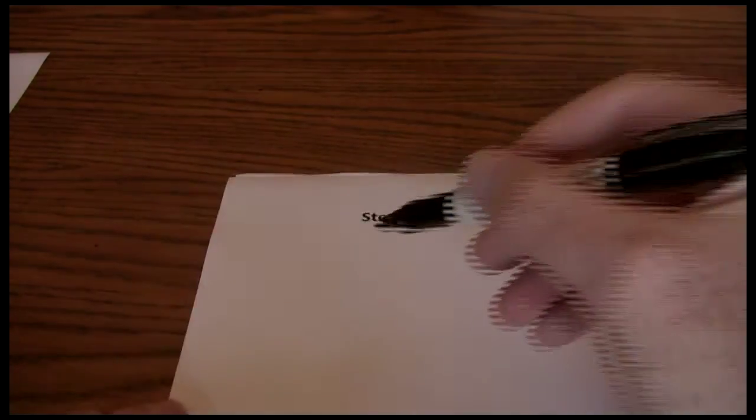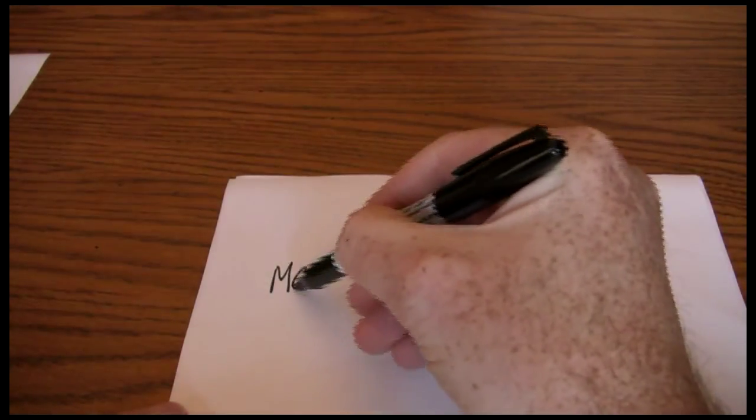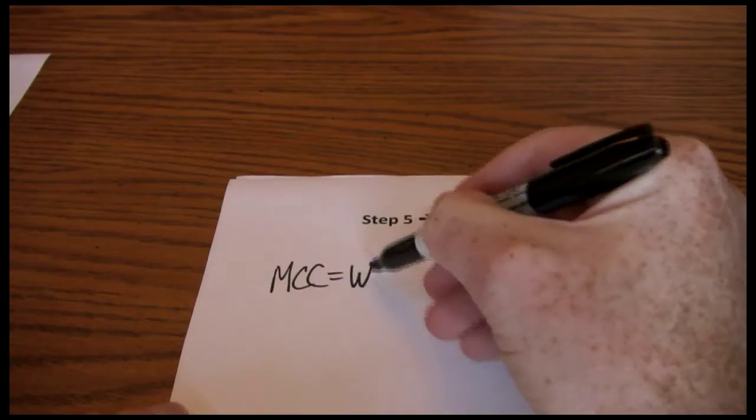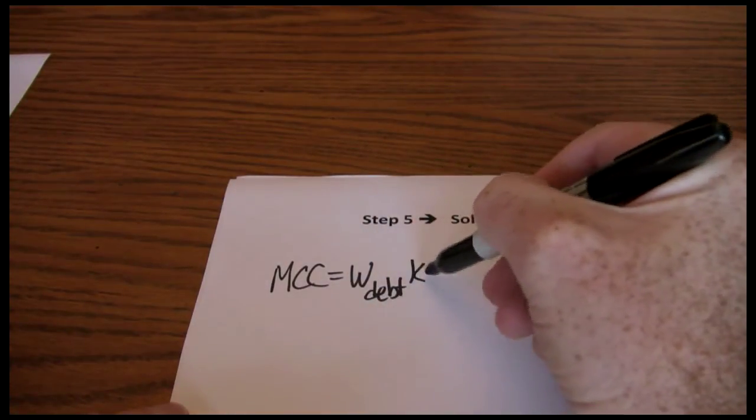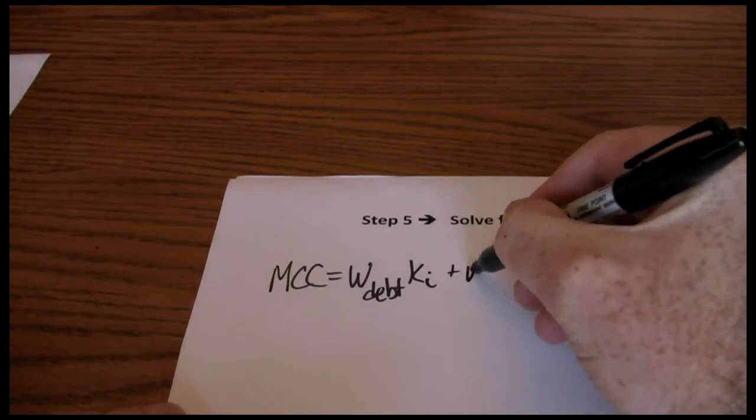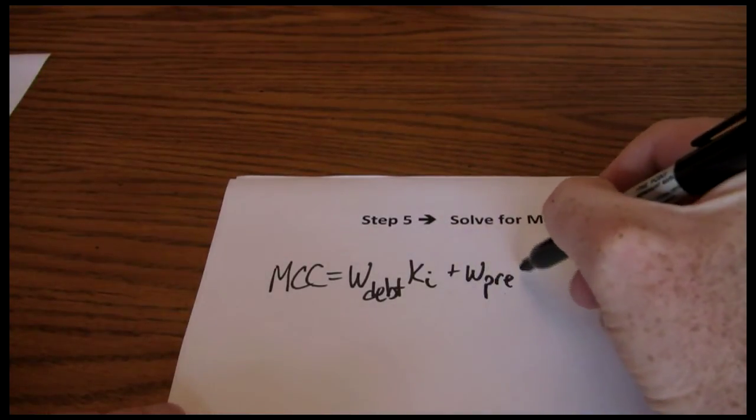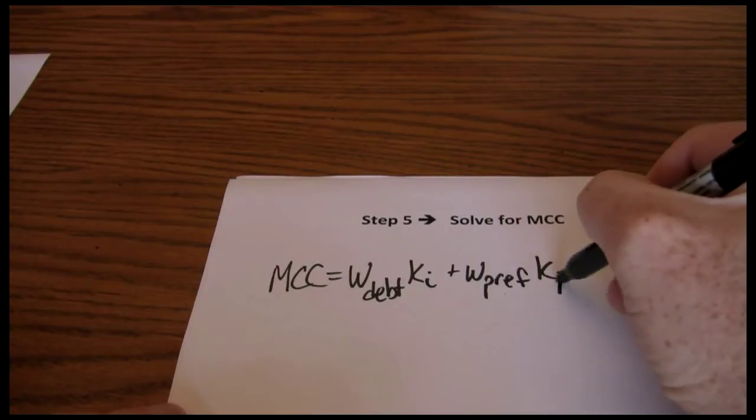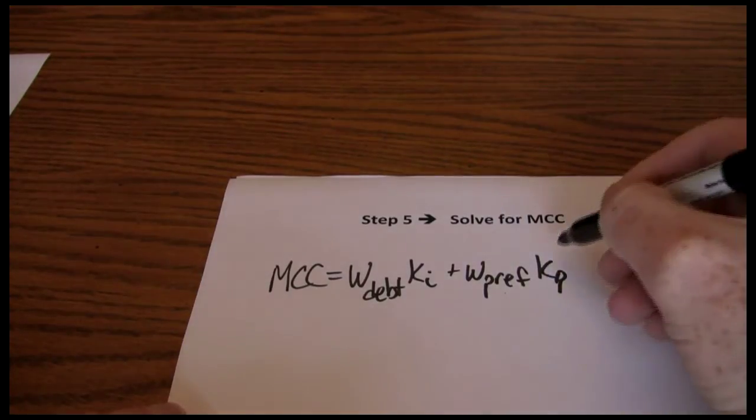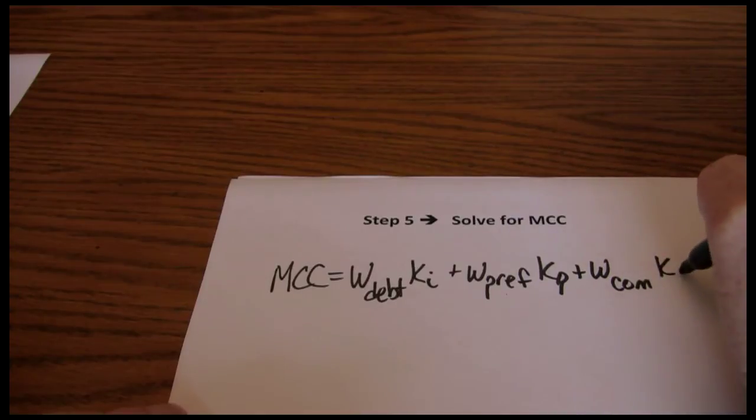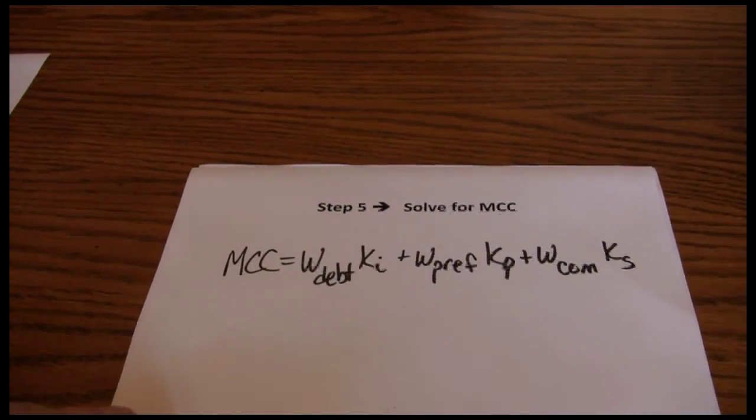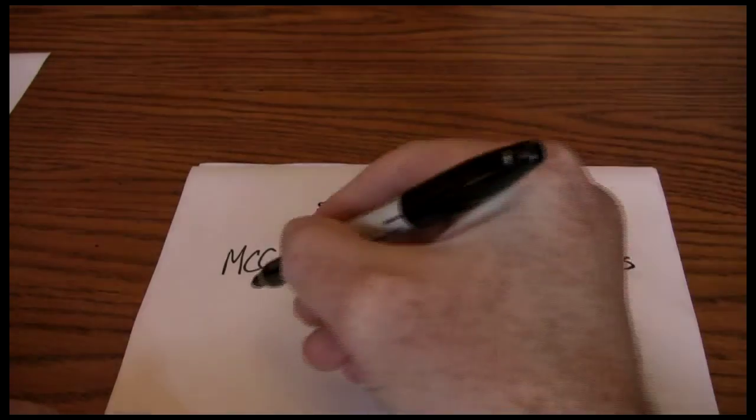The marginal cost of capital takes the weight of debt times the after-tax cost of debt plus the weight of preferred times the cost of preferred plus the weight of common times the cost of common. So we need each of those components that we solved for previously.